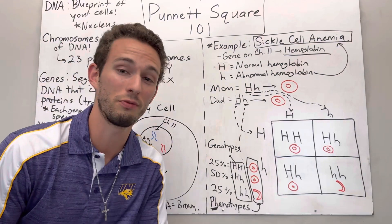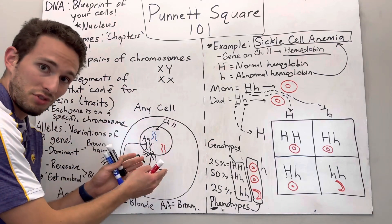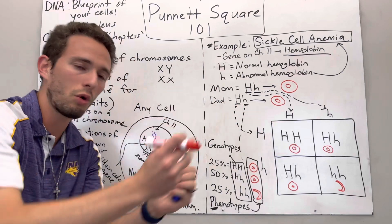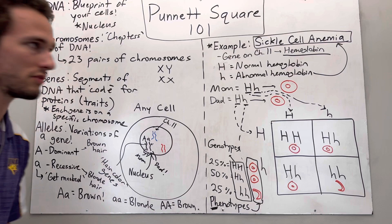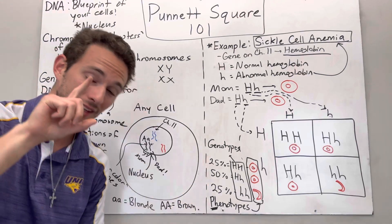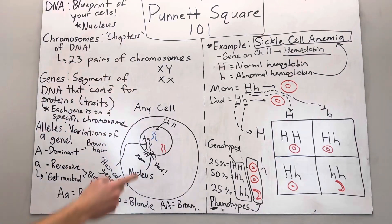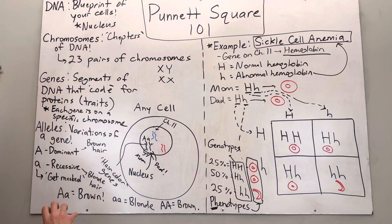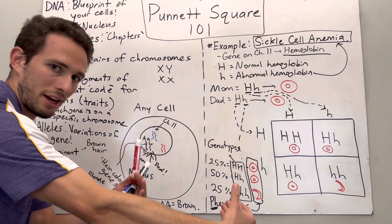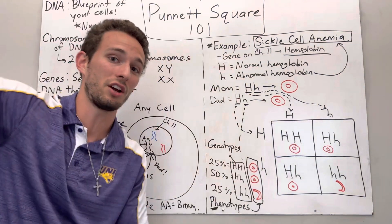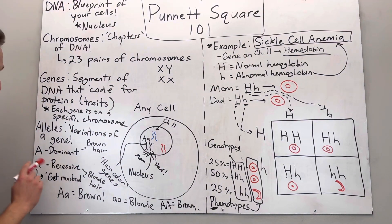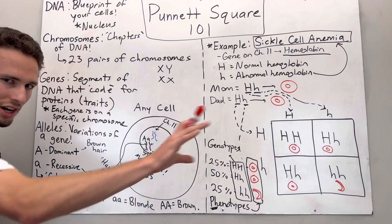As a brief review before we move on: you're made of cells. You have DNA — the blueprint for proteins and therefore your traits — all organized into chromosomes, which are the chapters of DNA. You've got 23 pairs, and you get one of each from mom and dad. Based on that, you also get different alleles, which are variations of genes. Genes are the segments of DNA that code for that protein or trait, but you get variations depending on what you get from mom and dad, shown through dominant and recessive alleles.